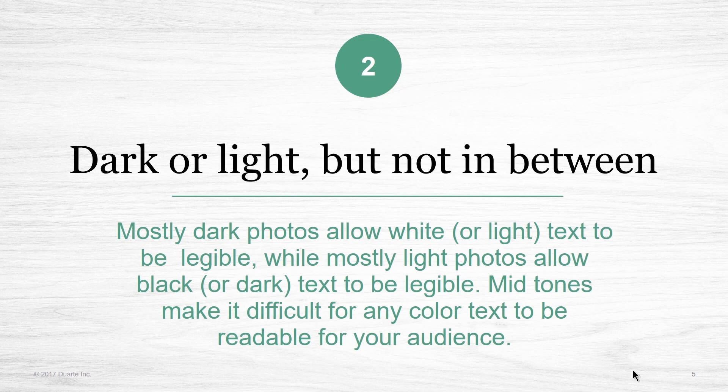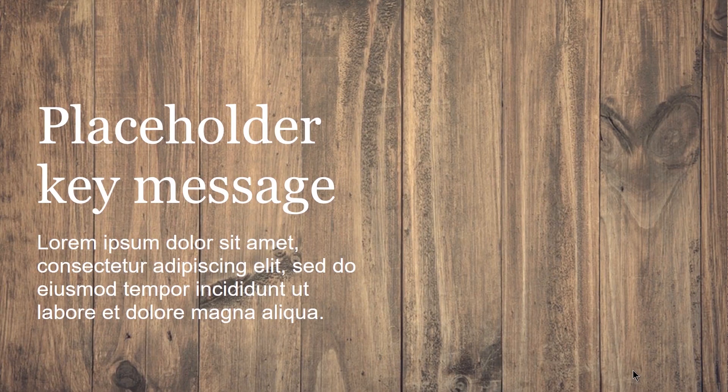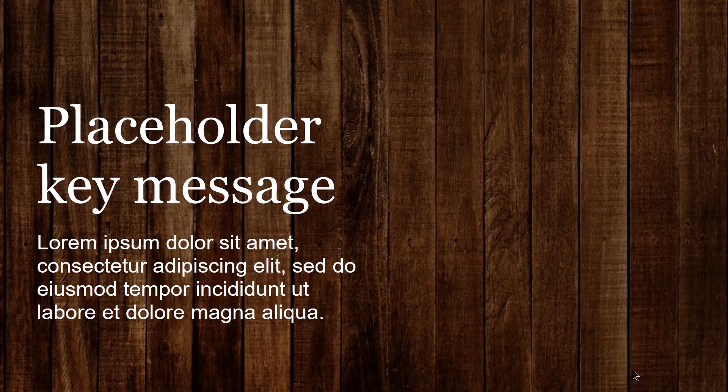The second rule is to choose a photo that's either mostly dark or mostly light, but not somewhere in between. I like to avoid the mid-tones or the grays. For example, maybe I'm giving a talk about sustainable resources and construction and I want to use wood textures. This particular wood texture is really beautiful, but it's not really dark and it's not really light, so white text on top of it is really hard to read — it might just look like a blur to the audience in the back of the room. A better choice would be a photo with a really rich dark texture. There's also not a lot of contrast here, so the white text really pops on top of this photo.